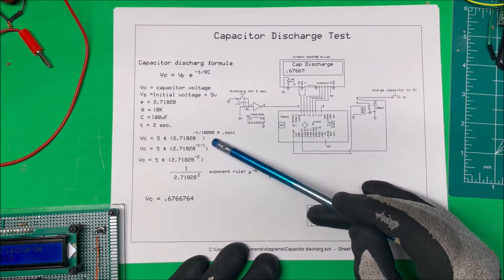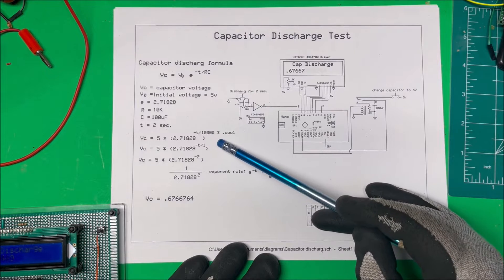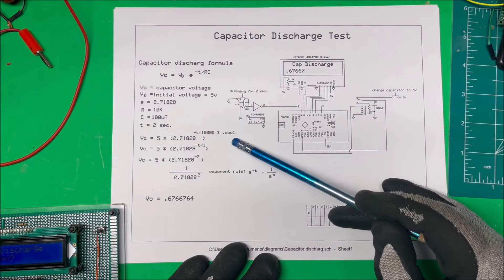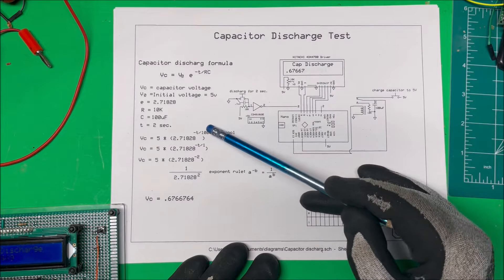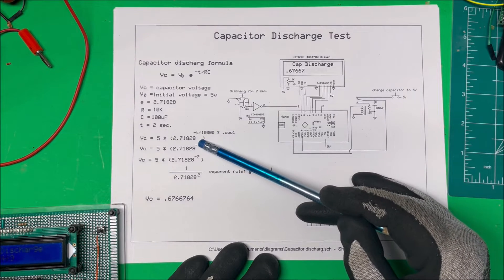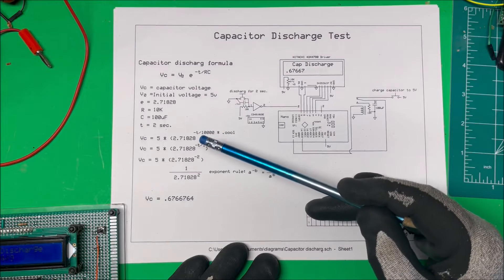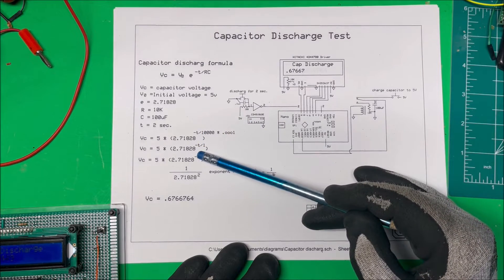So here's the formula here. So I'm taking my 10,000 times my 0.0001 farads, my 100 microfarad, and that's going to be one. That makes the math easier here. So I just have minus T here which is going to be our two seconds, minus two seconds here.